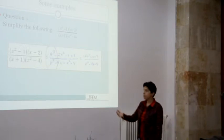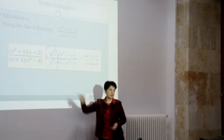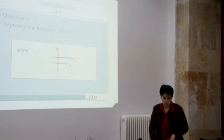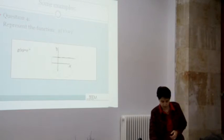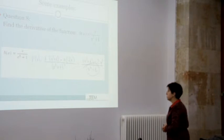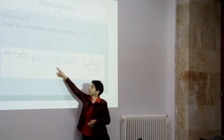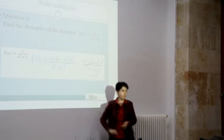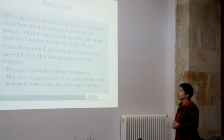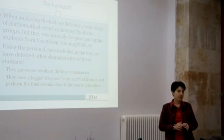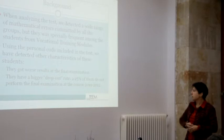Their performances include things like incorrect simplifications, or representing the exponential as a line. Question four asks to find the derivative of a function — they apply it incorrectly. We analyzed the test and detected a wide range of mathematical errors, especially frequent among the students from vocational training modules.